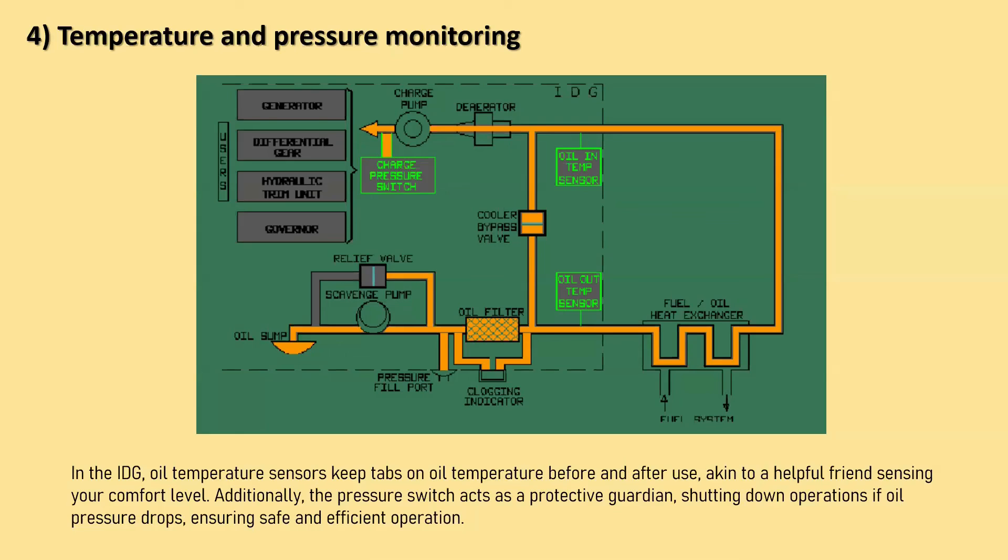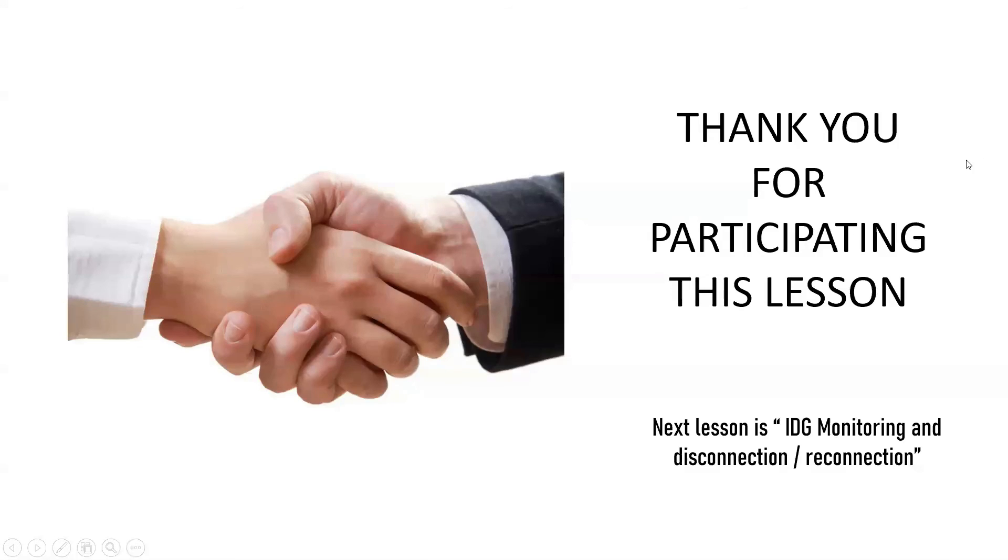In simple terms, the oil temperature sensors keep track of how hot or cold the oil is, while the pressure switch acts like a guardian, stepping in to prevent problems if the oil pressure drops too low. Together they help keep the IDG running smoothly and safely. Here is the pressure switch. That is the end of this lesson.